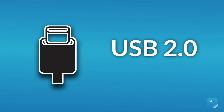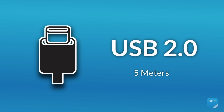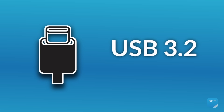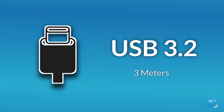Let's start with the basics: the maximum cable lengths for different USB versions. At full speed, USB 2.0 is designed for about 5 meters, or roughly 16 feet. USB 3.2 Gen 1 shrinks that down to about 3 meters, or roughly 10 feet. The faster the data moves, the shorter the cable can be.